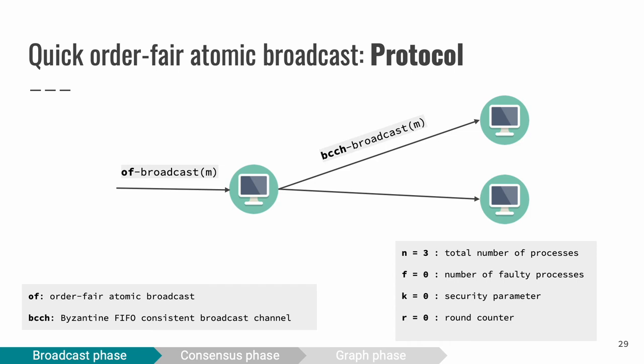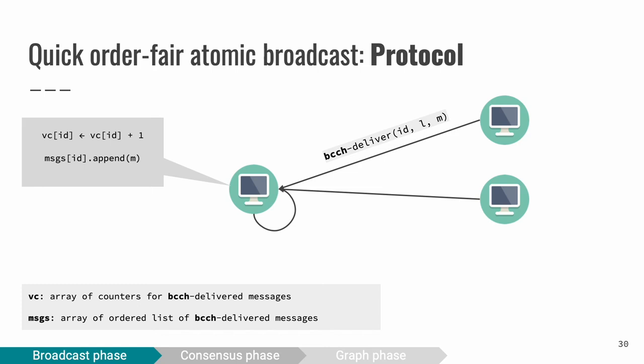Our algorithm has two events, OF Broadcast and OF Deliver. In this example, we have three correct processes, zero faulty processes, and we are in the very first round of the protocol and security parameter kappa is set to zero. We start from the OF Broadcast event triggered by client that is sending a payload message M to process I. Then process I will use BCCH primitive to broadcast the message to other processes. When a process BCCH delivers the payload message M, it increments the corresponding vector clock entry and appends M to the appropriate list in messages.